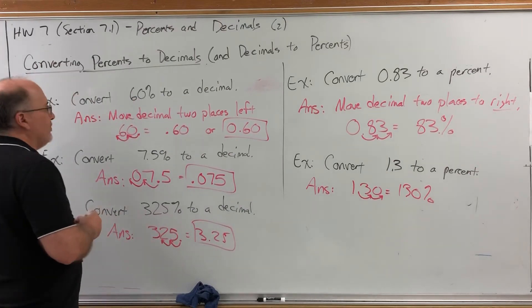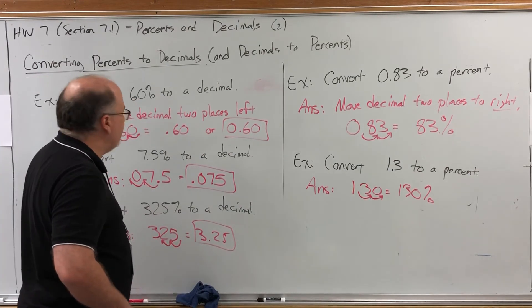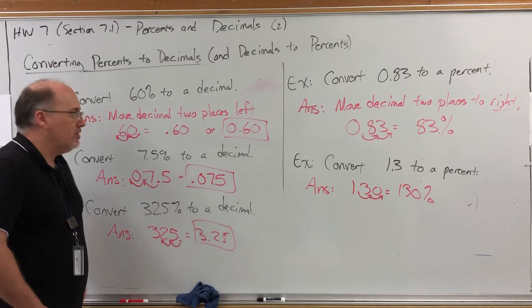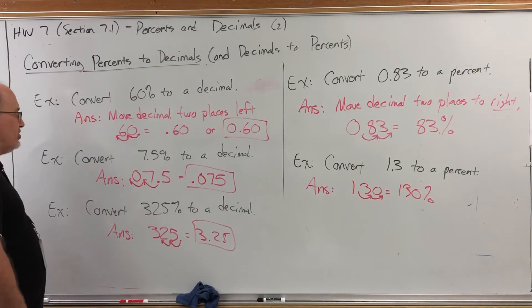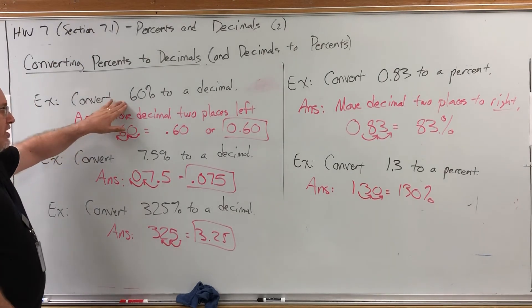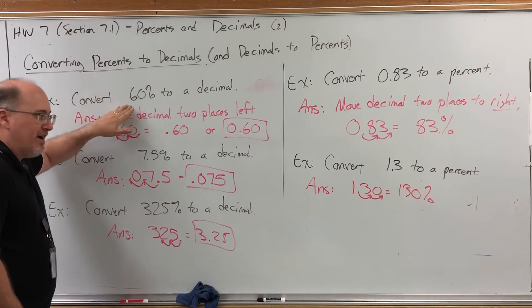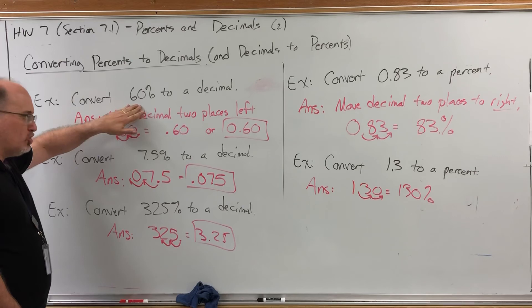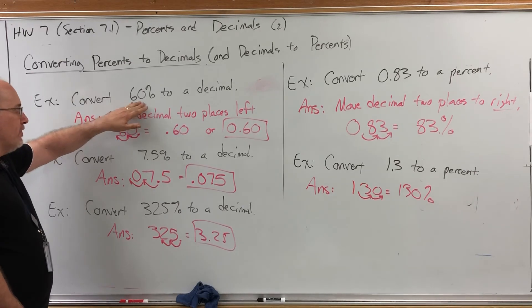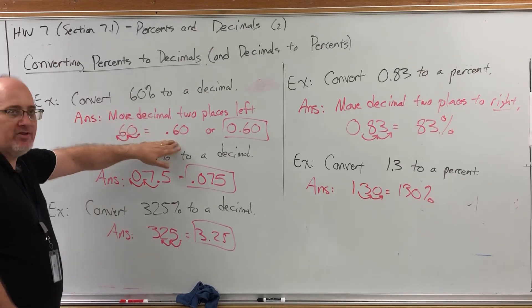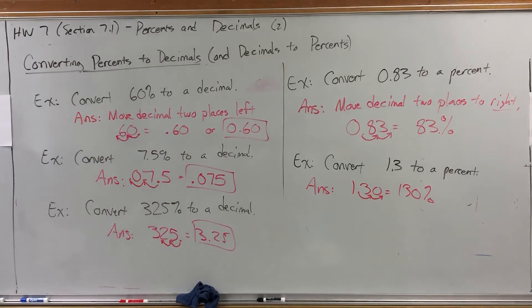So converting from percents to decimals is really easy. It's just a matter of moving the decimal in the correct direction. In case you forget which is which, this one is easy to recover. Percent means per hundred, which means you're dividing by a hundred, which makes your number smaller. So when you're converting from a percent, you're dividing by a hundred and move the decimal in the direction that makes the number smaller. Thank you.